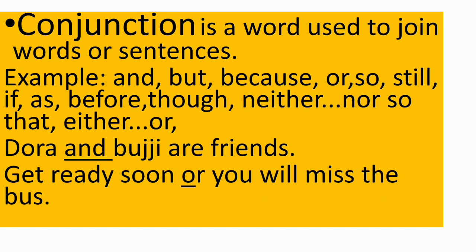'Dora and Bujji are friends' — here 'and' is the conjunction. 'Get ready soon or you will miss the bus' — in this sentence two clauses are joined, and the conjunction used is 'or.' 'Listen carefully and take notes' — the conjunction is 'and.' 'Man proposes, but God disposes' — here the conjunction is 'but.'